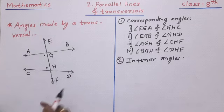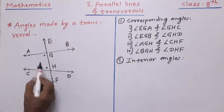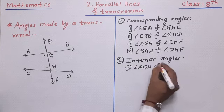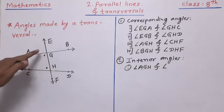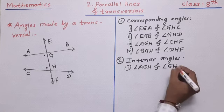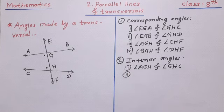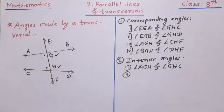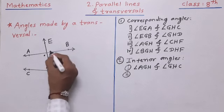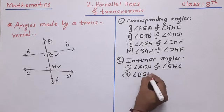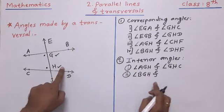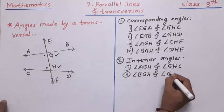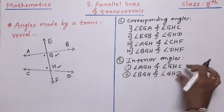The first pair of interior angles: this angle is angle AGH, and its interior pair is angle GHC. The second pair of interior angles is on the other side of the transversal and inside the lines. Those two angles are angle BGH and its pair of interior angle is angle GHD. These are the two pairs of interior angles.